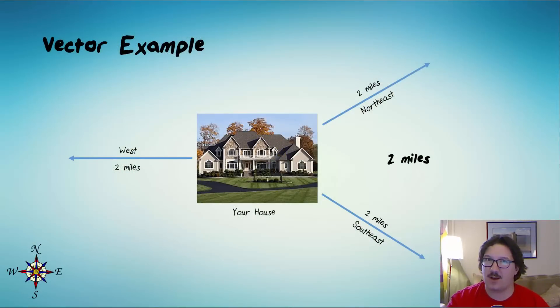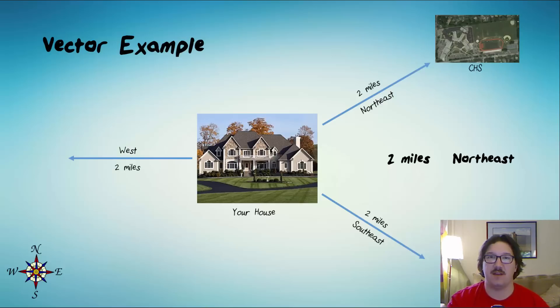However, if we just add one extra bit of information, if we say that the school is two miles northeast, then I know exactly where it is. The addition of the information about direction really helps out.